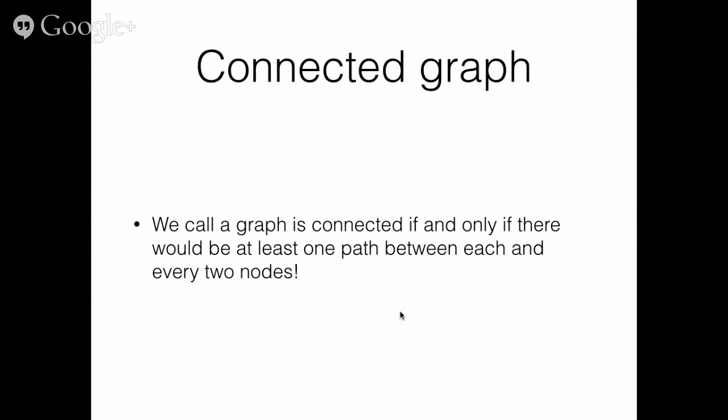A connected graph is a graph in that all the nodes are connected, means that there is at least one path between every two nodes.